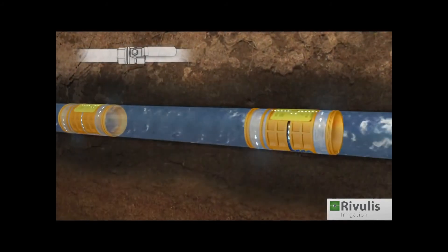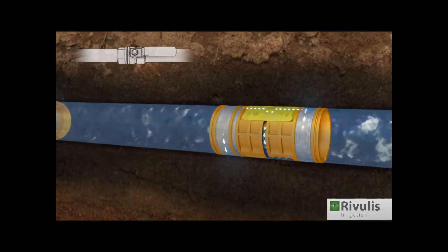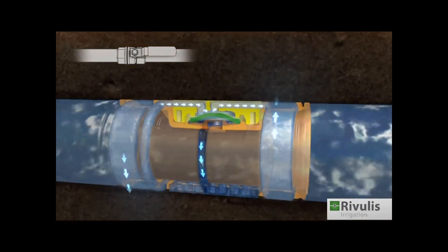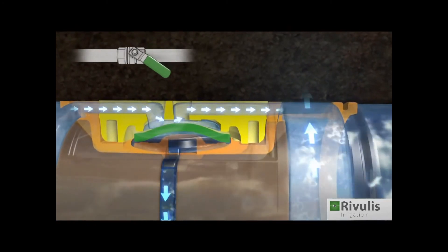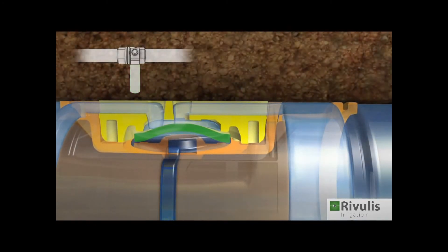The Hydro PCND with its no-drain drippers is especially designed for pulse operation and subsurface irrigation. The no-drain mechanism protects the drip line from soil particle infiltration when the water is shut off.